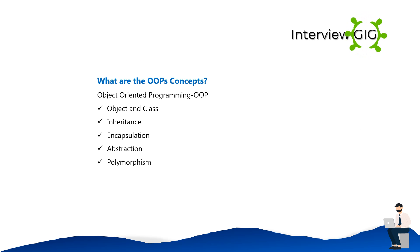What are the OOP concepts? Object-oriented programming includes: object and class, inheritance, encapsulation, abstraction, and polymorphism.